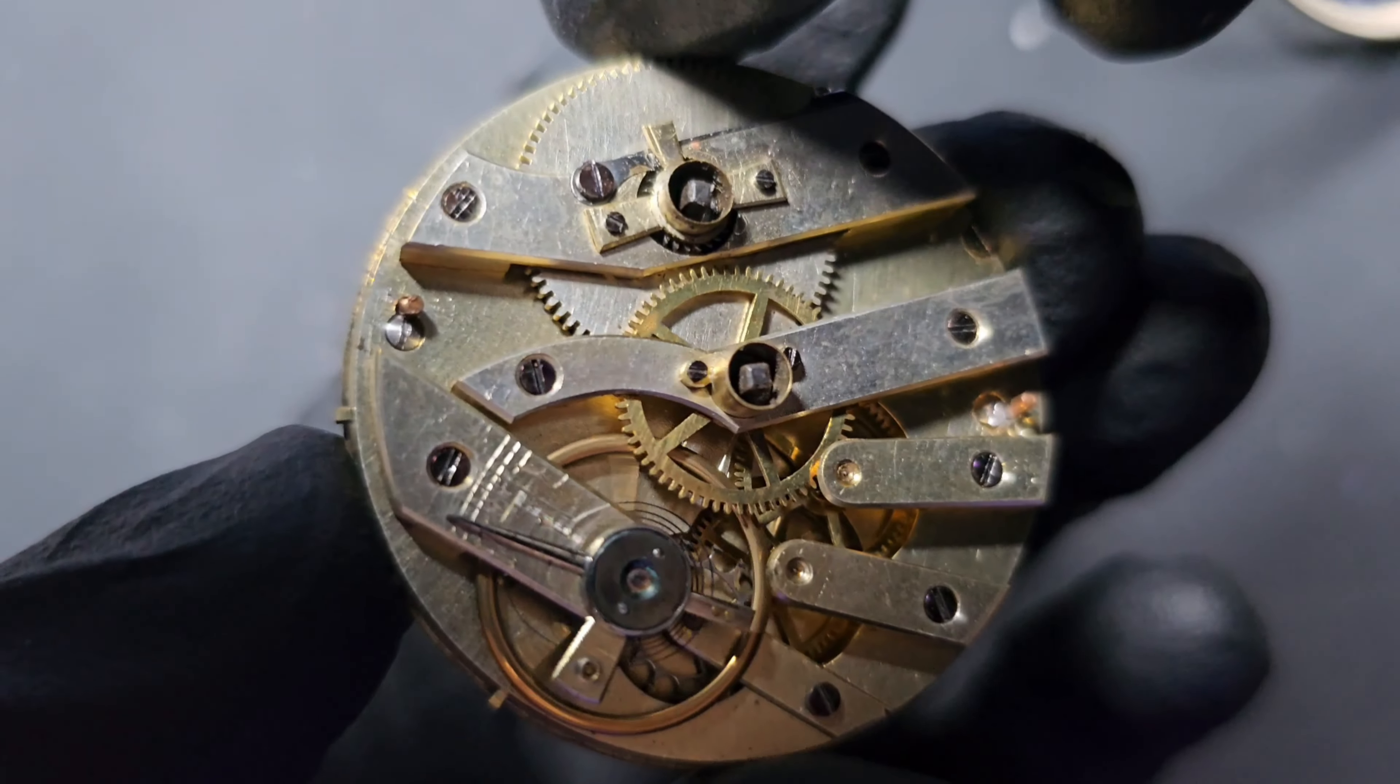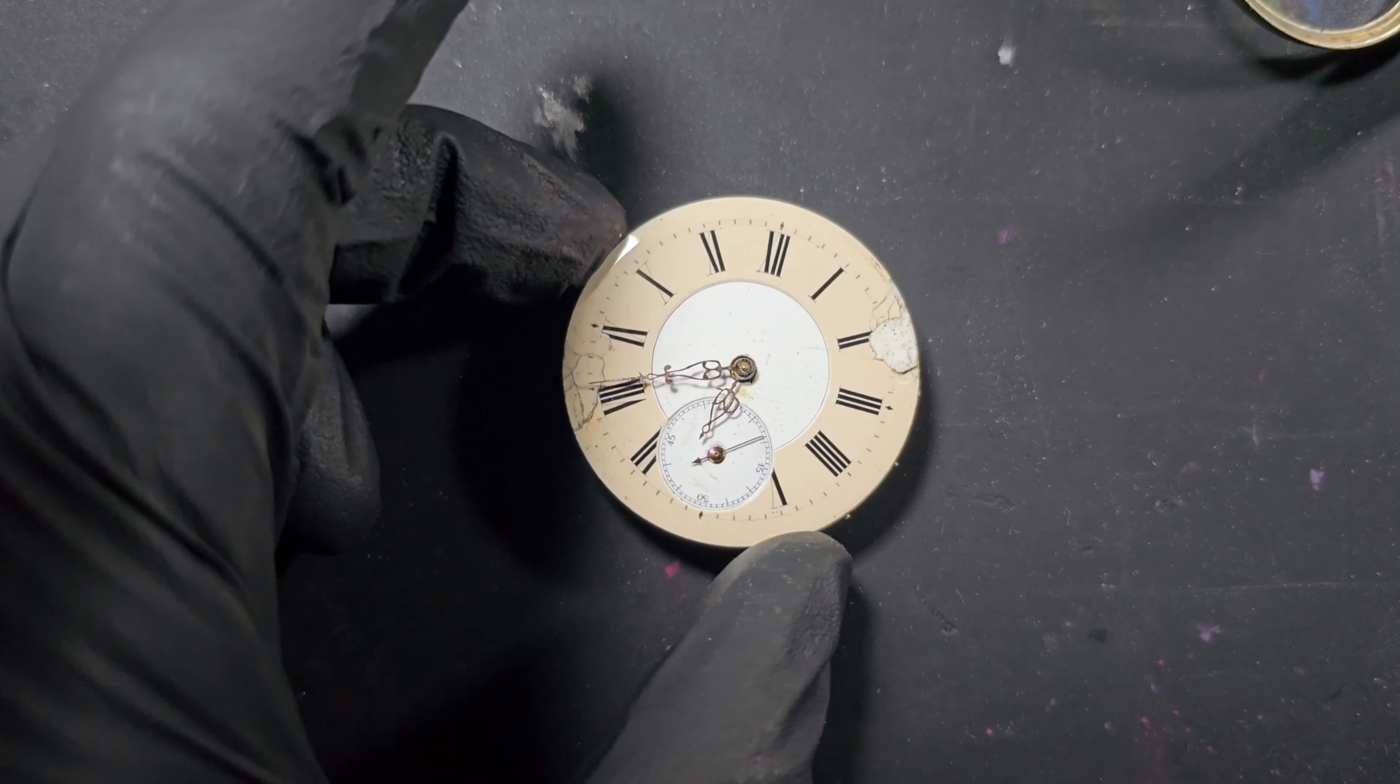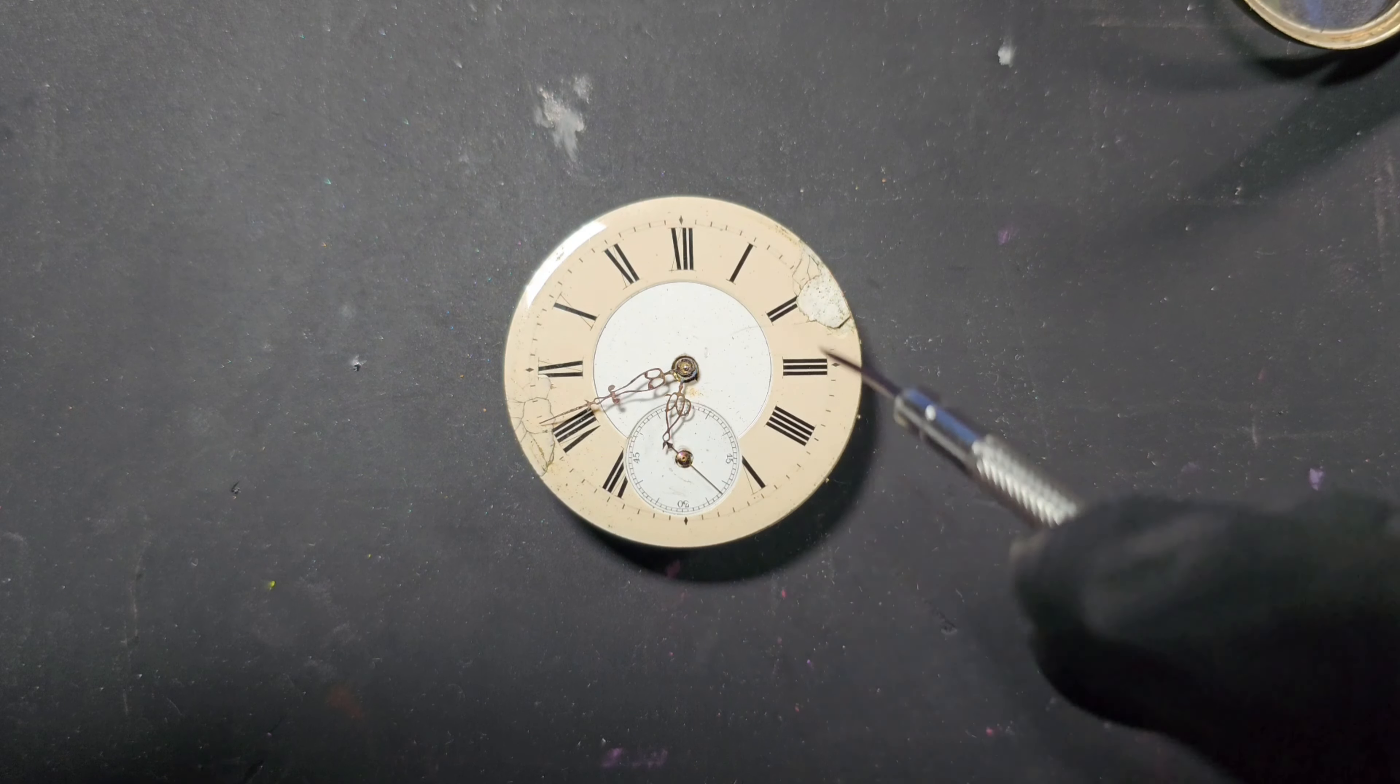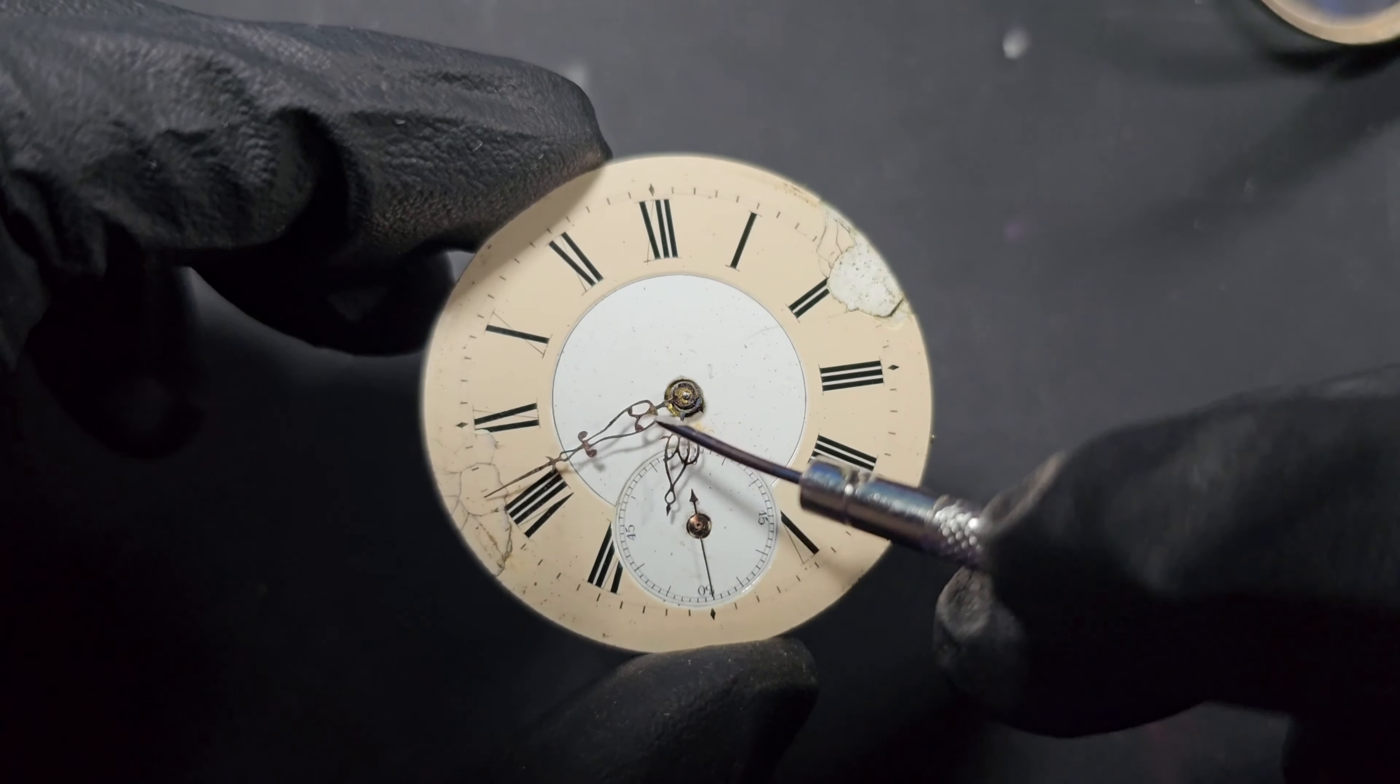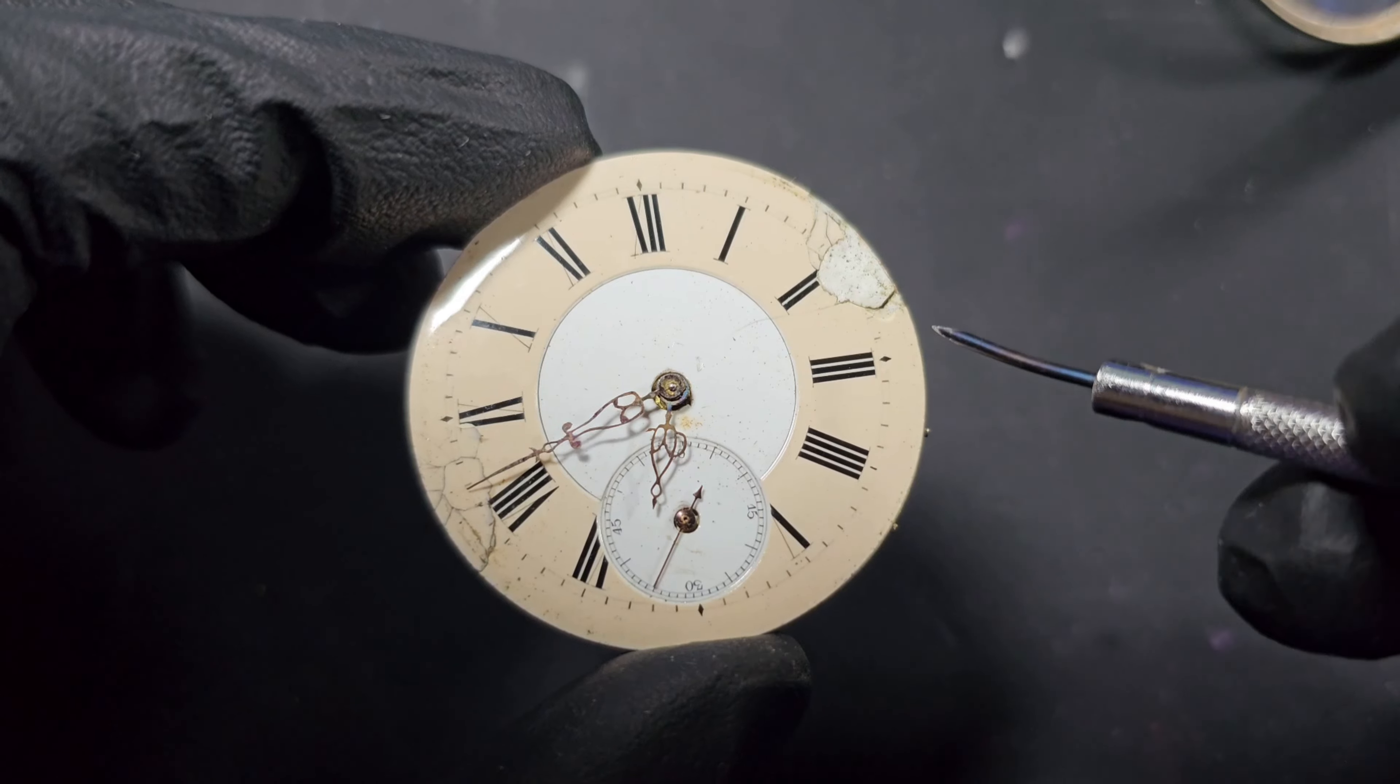But to remove the watch base we need to take off the hands. Now I've been very careful to choose a watch that does not contain any radium. A lot of the old antique pocket watches have radium dials and especially the hands which help them glow in the dark. Now radium is extremely dangerous.